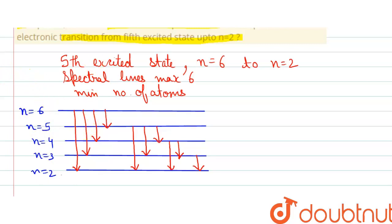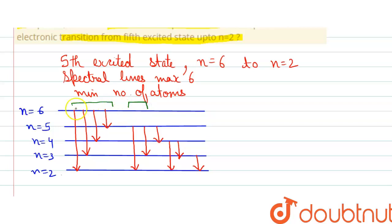To find the minimum number of atoms, we can see that an atom can be present in n equals to six, five, four, three, or two — in any state. If we have to find the minimum number of atoms and the spectral lines should be maximum six, then if we choose four spectral lines and two spectral lines, we only need two atoms: one atom can undergo four spectral line transitions and one can undergo two.